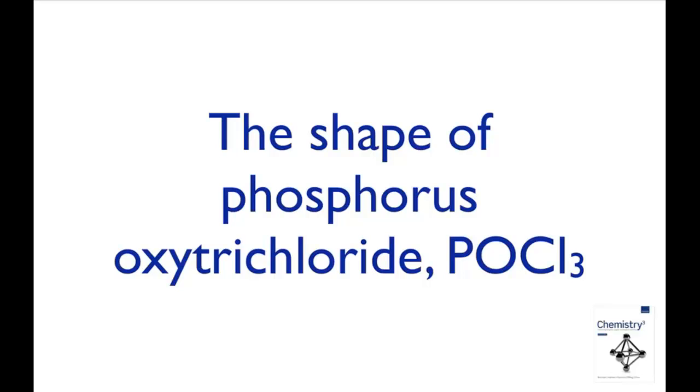In this screencast we're going to use valence bond electron pair repulsion theory or VSEPR to predict the shape of the phosphorus oxytrichloride molecule POCl3.